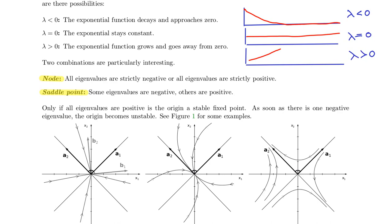We speak of a node if all eigenvalues are strictly negative or all eigenvalues are strictly positive, while for a saddle point, some eigenvalues are negative, others are positive. You see a few examples down here in the figure. So this is an eigenvector, and if the solution starts in the direction of an eigenvector, then it would simply decay or grow along this eigenvector.